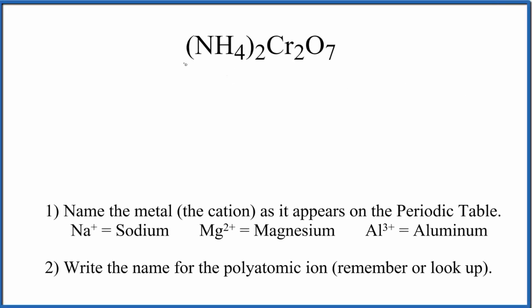In this video, we'll write the name for NH42Cr2O7. So in this case, we have NH42. This is the ammonium ion, and this Cr2O7, this is the dichromate ion.